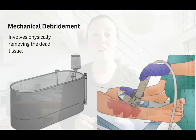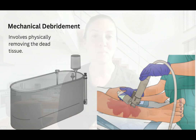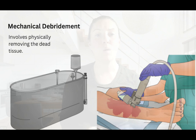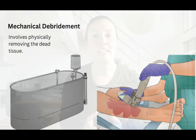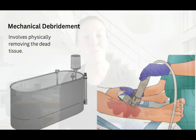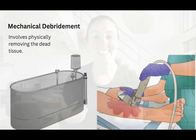Next is mechanical debridement, which involves the physical removal of dead tissue. There are a few different methods: wet-to-dry dressing, irrigation, or ultrasound. The most common method is wet-to-dry dressing, where you apply a wet dressing and remove it once it dries out, pulling off the dead tissue in the process. This is very painful.